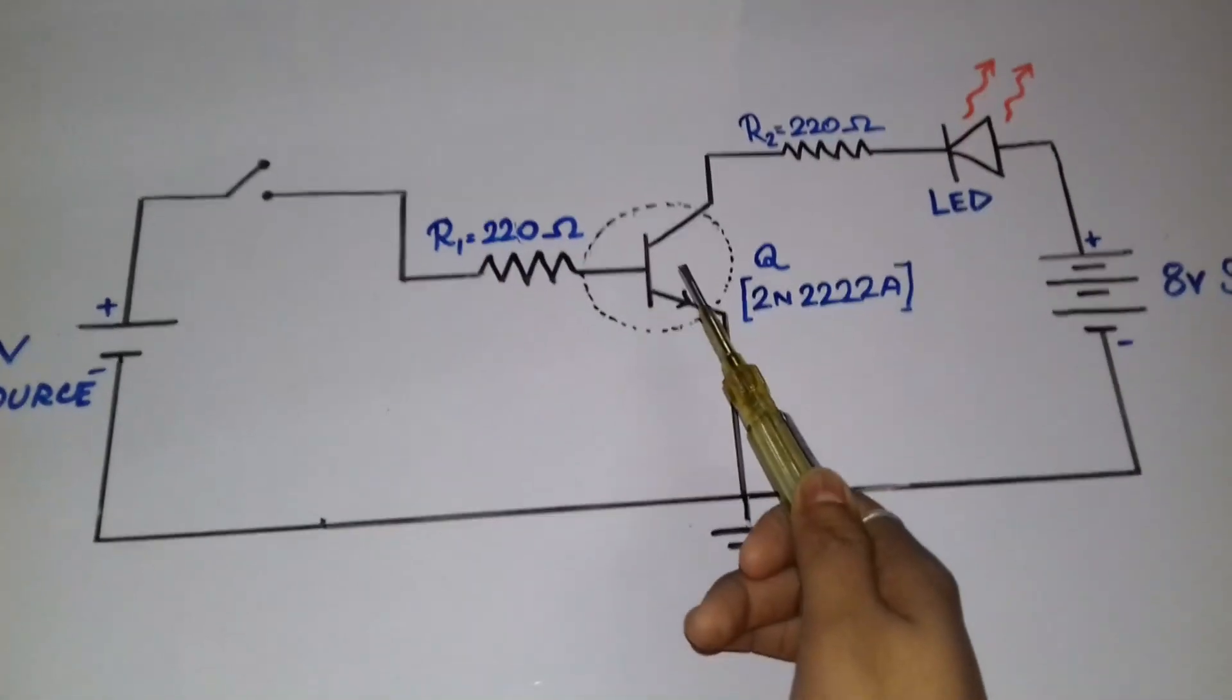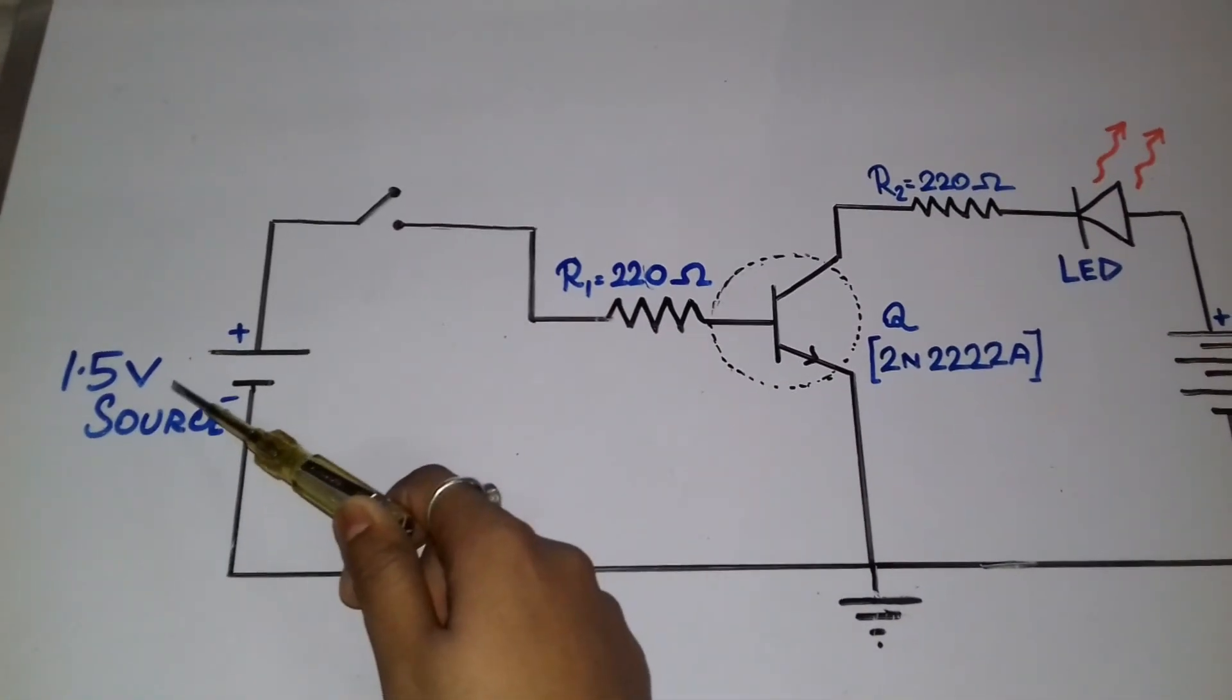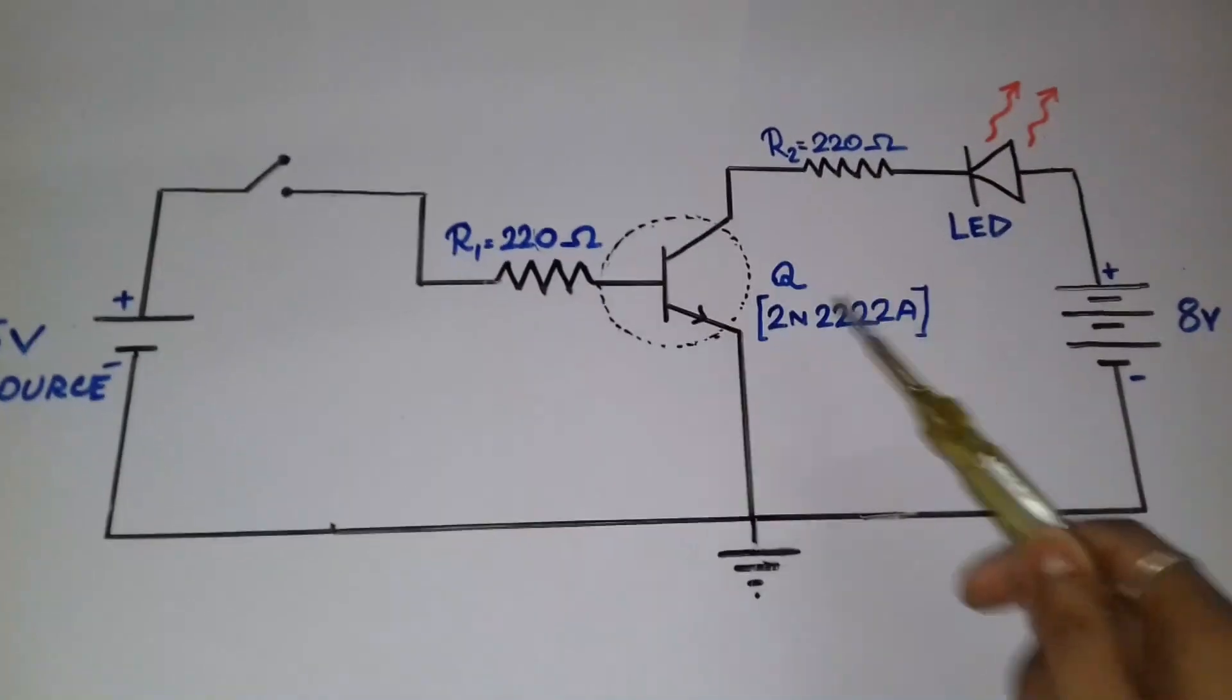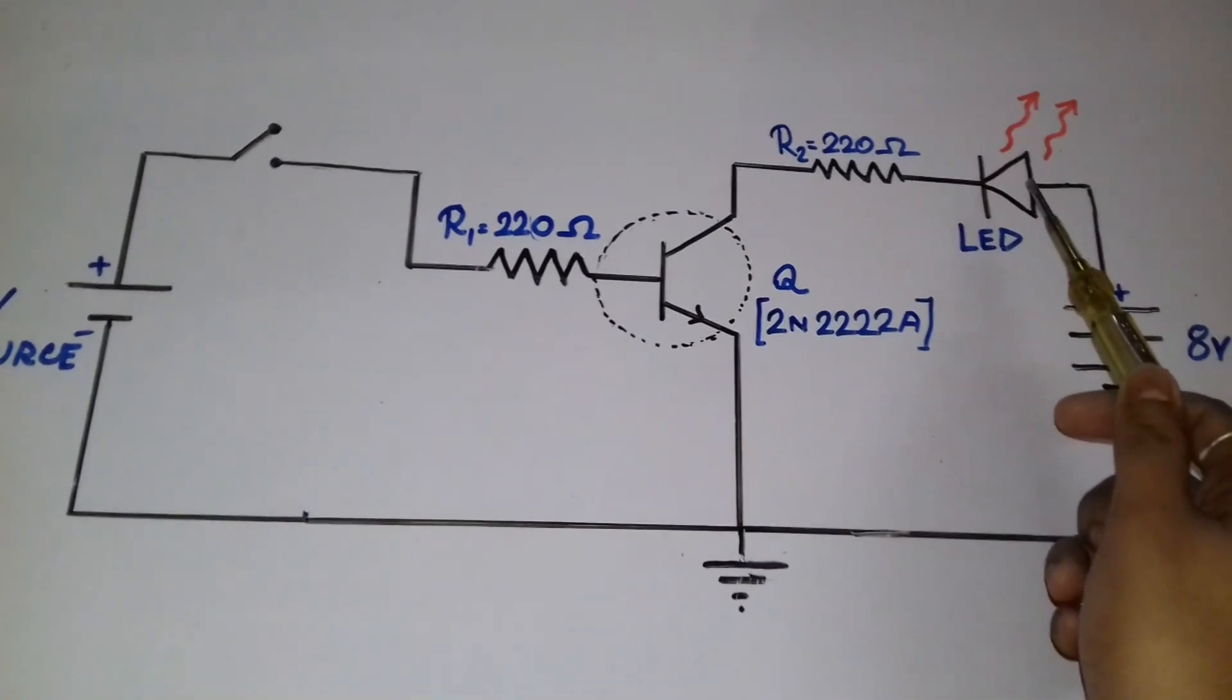Then we have to make this transistor work as a switch. So by this switch we will control the 1.5 volt source, and the transistor will act as a switch for this LED.